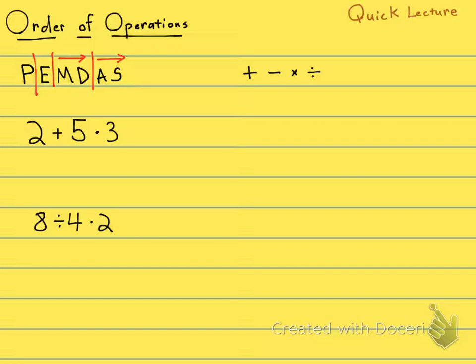So I'm going to show you something that you may not have known, and that's this left to right thing. So let's look at this first example: 2 plus 5 times 3.